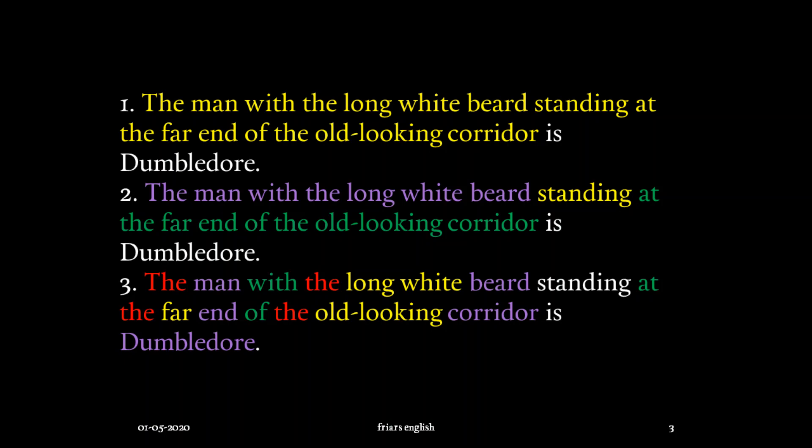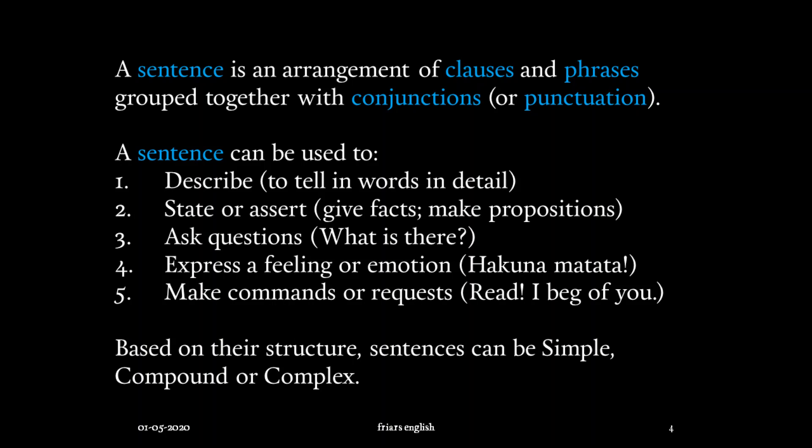First, let's look at a simple definition of sentence. A sentence is an arrangement of clauses and phrases grouped together with conjunctions or punctuation. This is my definition of sentence. A sentence can be used to describe — that is, to tell or speak about in words, in detail — trying to represent something, some event or phenomenon, something that you can sense.